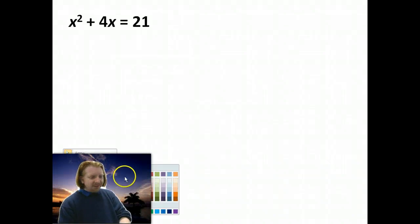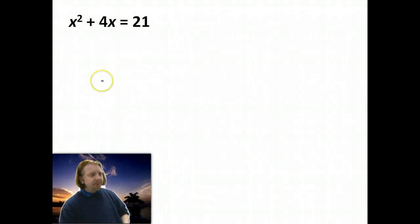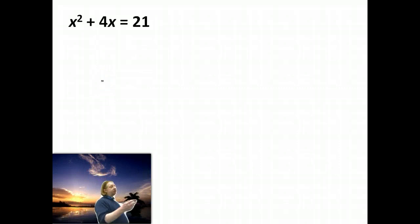All right guys. Now as we said, the first thing we have to do with these is get them equal to 0. So subtract 21 from both sides. I'm not allowed to do anything with quadratics unless the entire expression is set equal to 0.